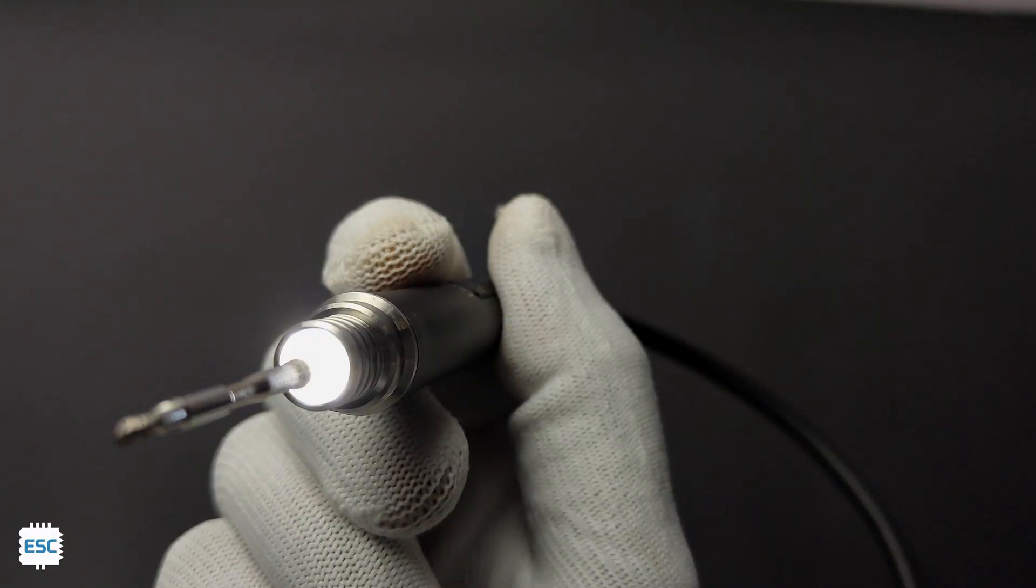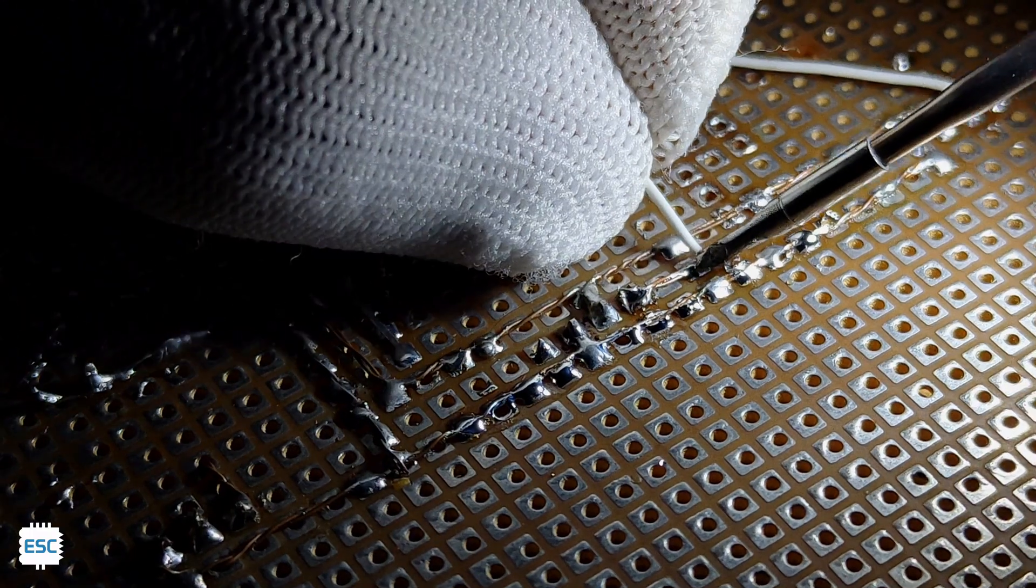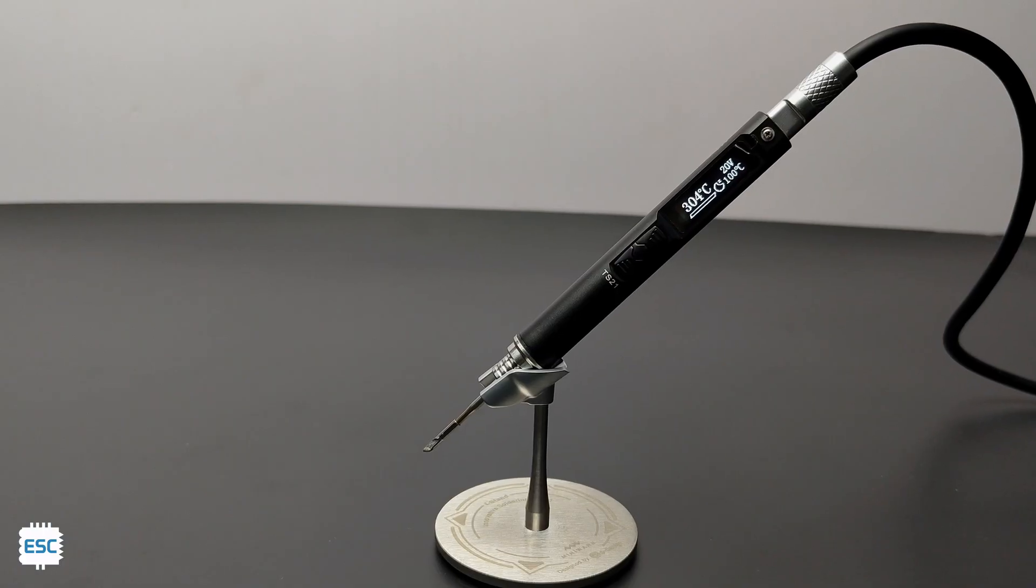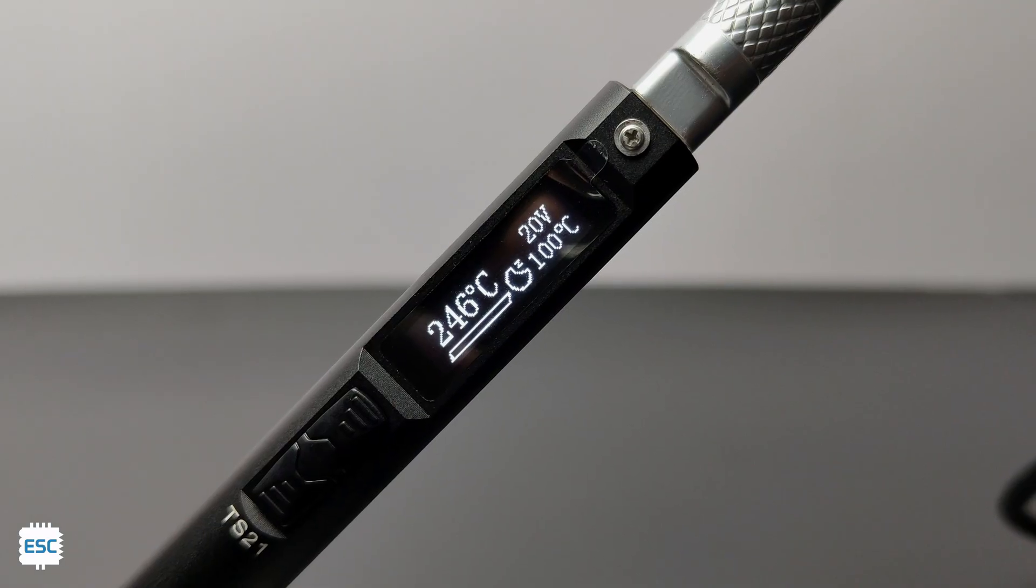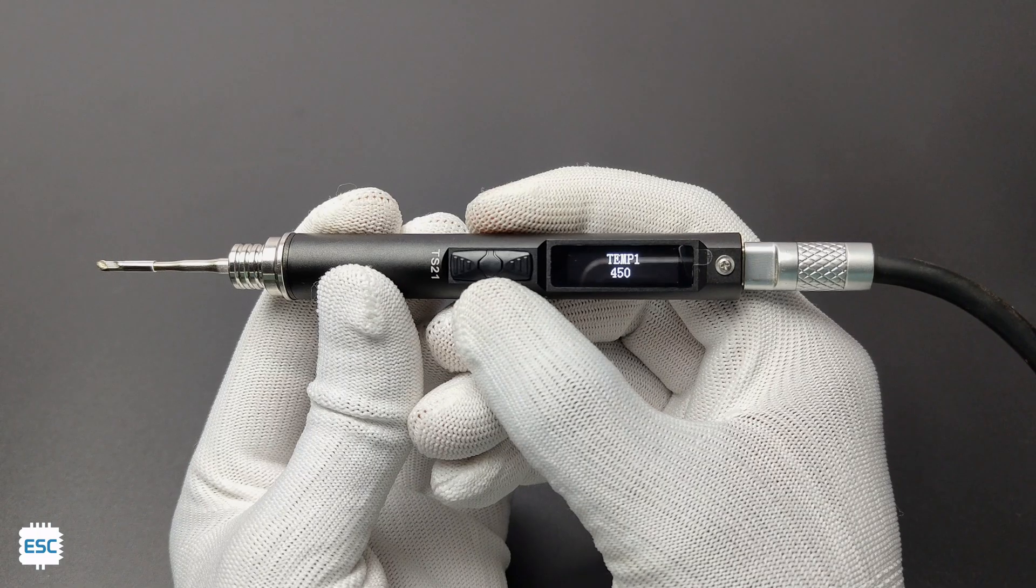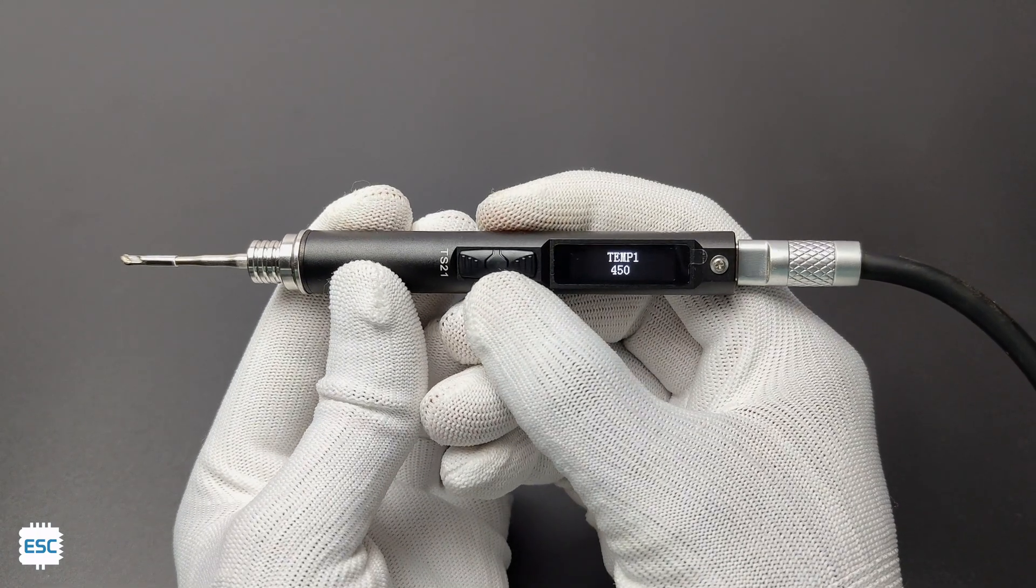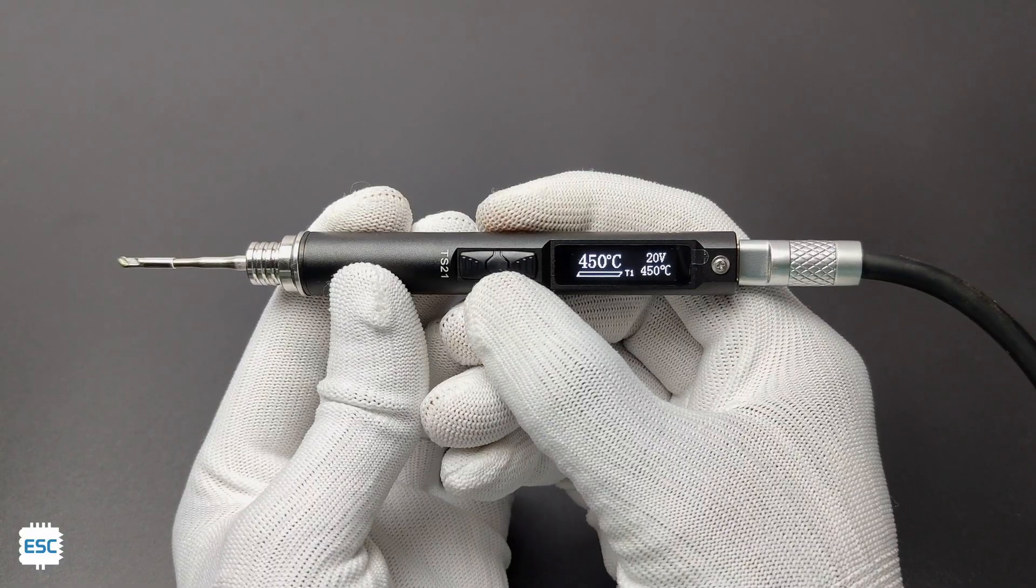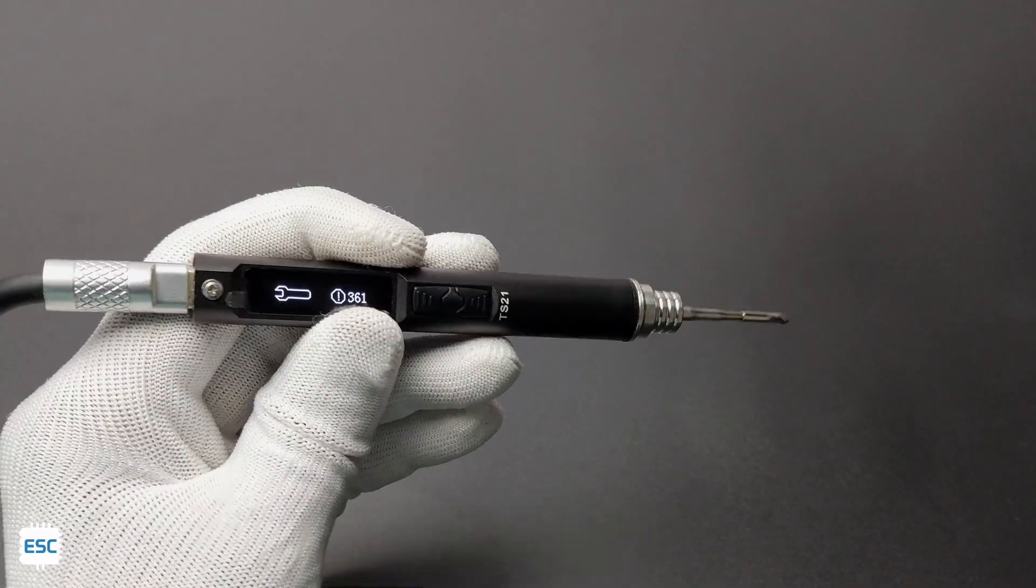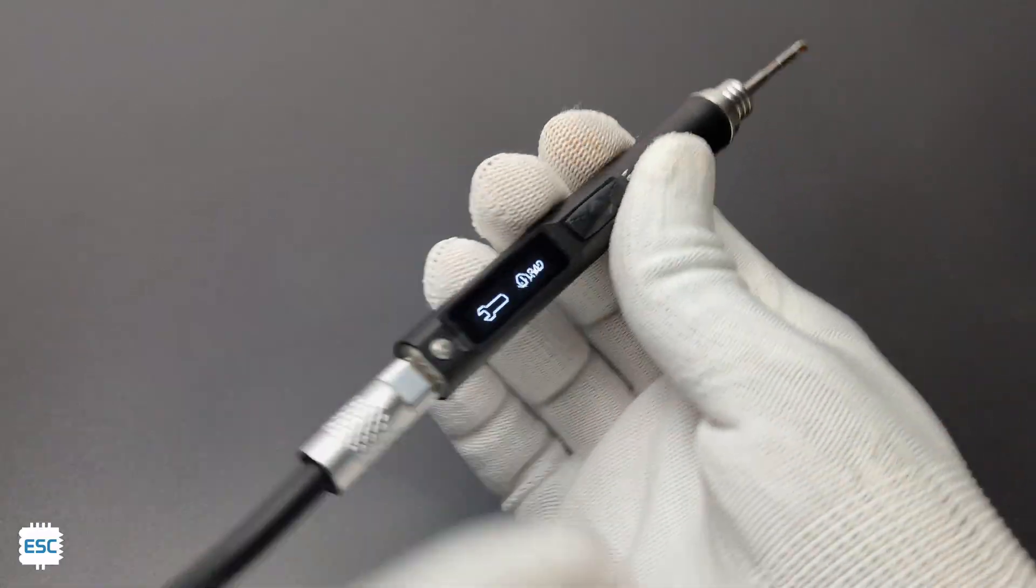The LED light gives better vision indoors. It will go to sleep mode if the iron is in stand or in resting position. TS21 can reach up to 450 degrees Celsius and this is good for heavy tasks. As you can see, the screen orientation changes according to the hand.